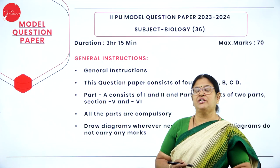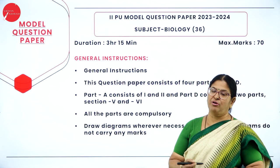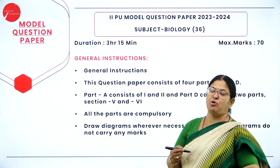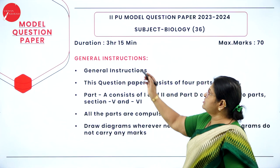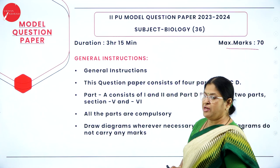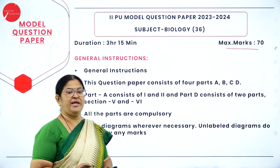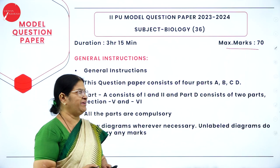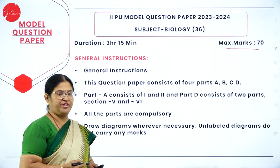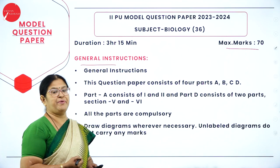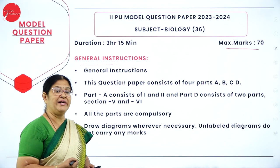Moving on to the question paper. By this time you are through with the pattern, but let me briefly explain the model. The duration of examination is 3 hours 15 minutes and the maximum marks is 70. The practical examination is for 30 marks, so the theory paper is for 70 marks. The 15 minutes is given to understand the question paper so you will be mentally prepared to answer after 15 minutes.